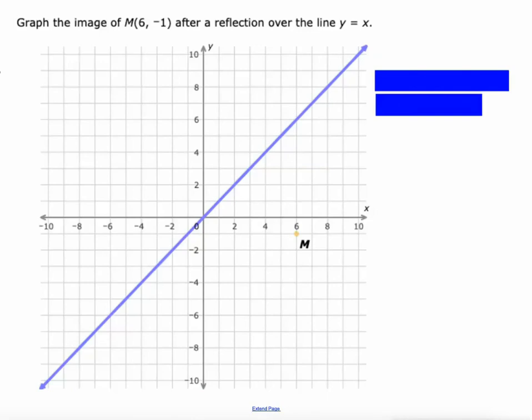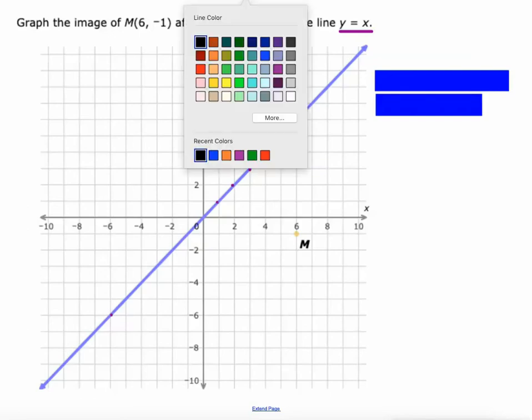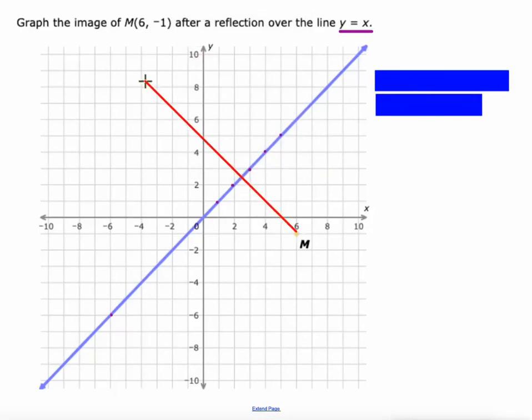Now we're going to reflect over some different things. This line right here is called y equals x. It's where all your y values equal your x values. If we want to reflect over that line, we'll draw our red line in. This meets at a 90 degree angle with the line of reflection. It's one diagonal unit, two diagonal units, three diagonal units, a half of a diagonal unit. So we'll go three and a half the other way: one, two, three and a half is right there.